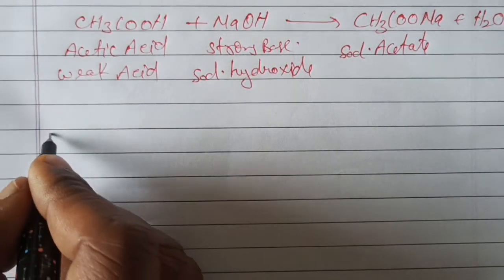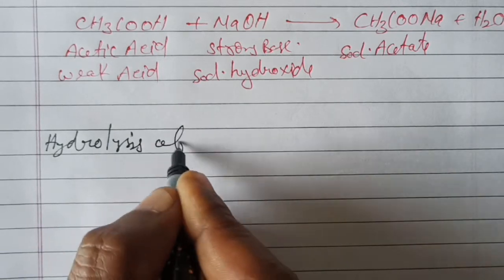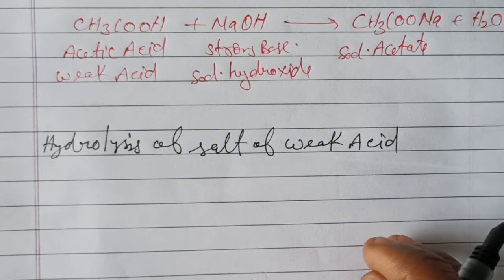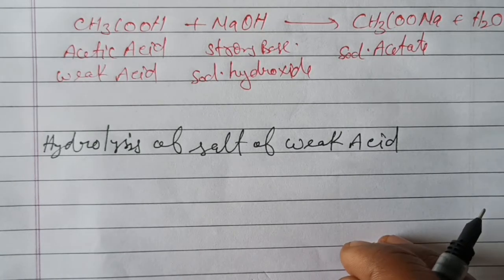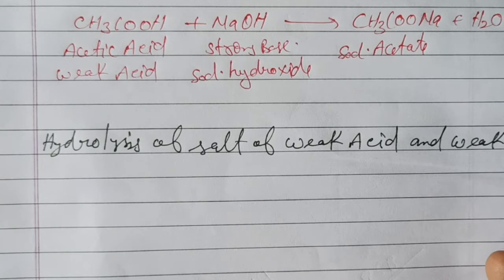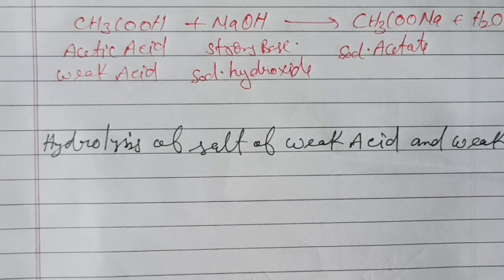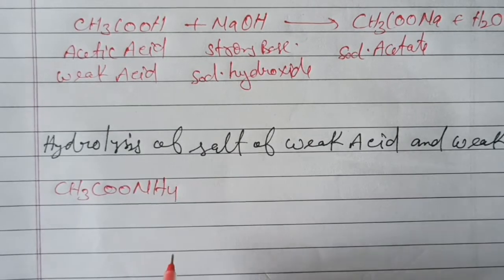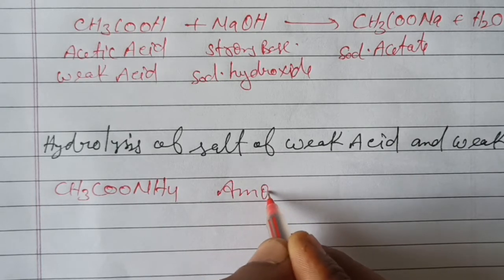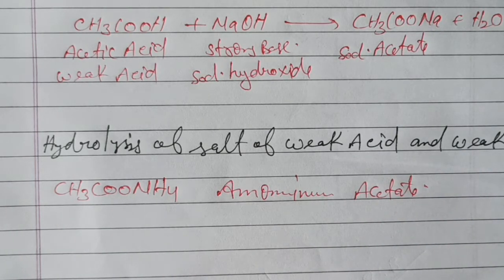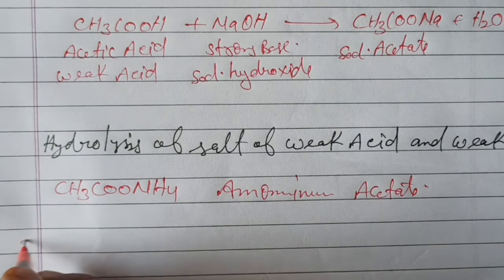Next: hydrolysis of salt of weak acid and weak base. An example of such type of salt is ammonium acetate. Ammonium acetate is an example of a salt which is made up of weak acid and weak base. When we dissolve it in water,